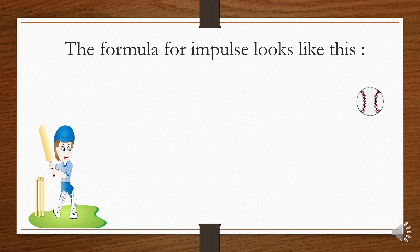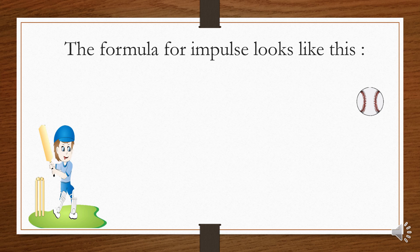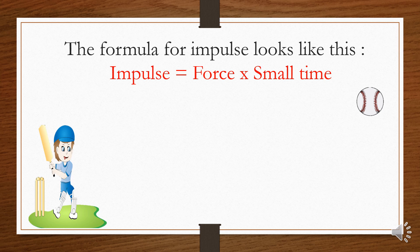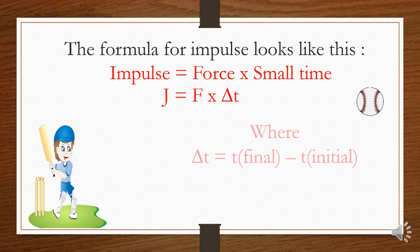The formula for impulse looks like this: Impulse is equal to force multiplied by small time. Or in symbols, impulse equals F times Δt.